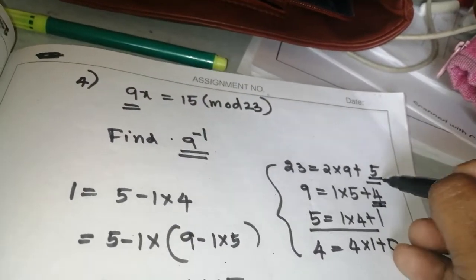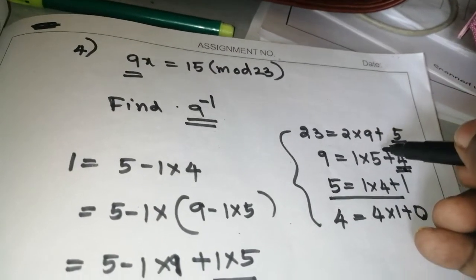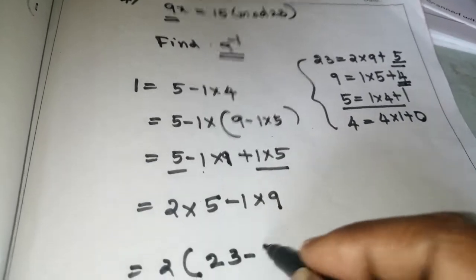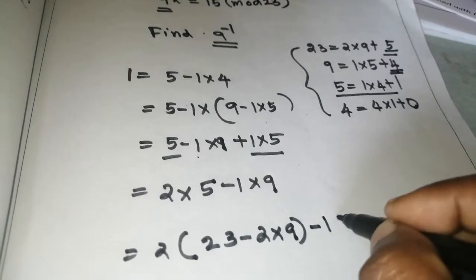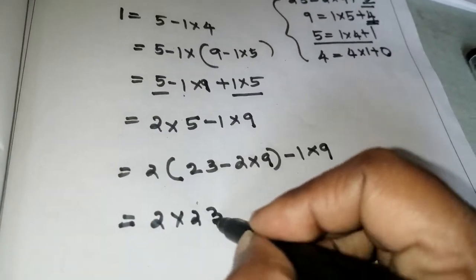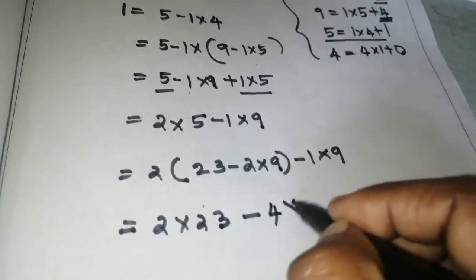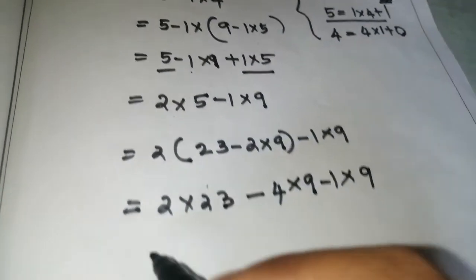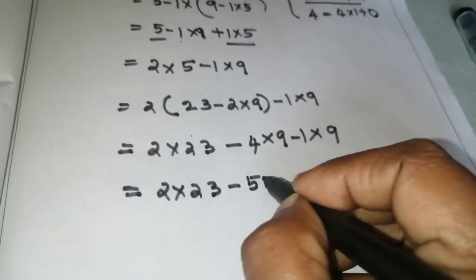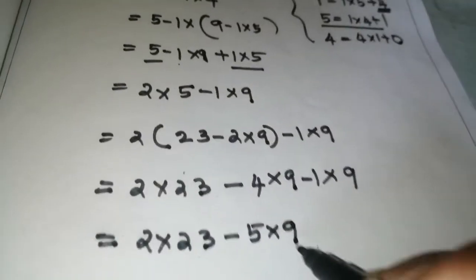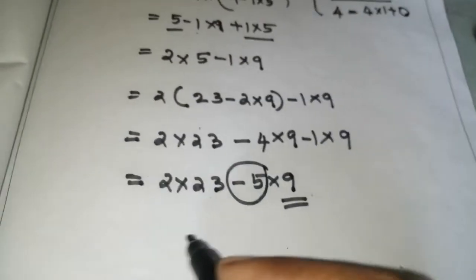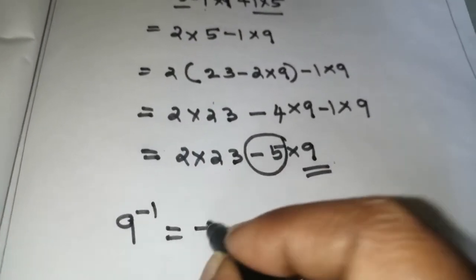Next, substitute 5 with 23 minus 2 into 9. That is: 2 into 23 minus 2 into 9 minus 1 into 9, which gives 2 into 23 minus 4 into 9 minus 1 into 9, that is 2 into 23 minus 5 into 9. So 9 inverse equals negative 5.